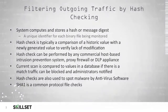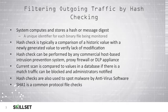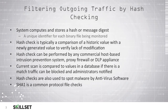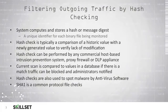You can filter your outgoing traffic by hash checking. The system would compute and store a hash value, or a unique digital fingerprint, for each binary file that you are monitoring. Hash checking is typically used to verify that a file has not been modified by comparing a known historic hash value with a newly generated hash value. Hash checking can be performed by several different commercial host-based intrusion prevention systems, proxy firewalls, as well as DLP or data leakage prevention appliances.